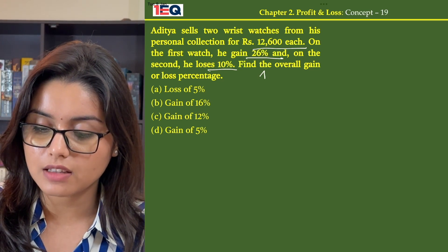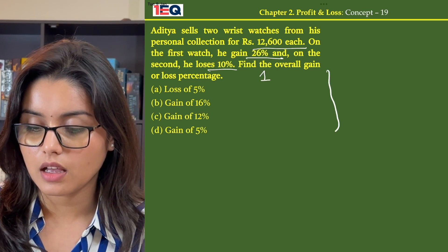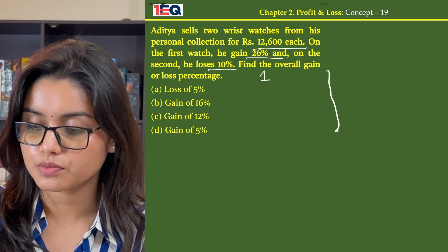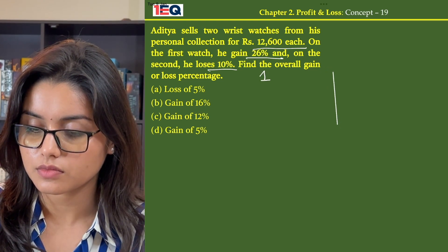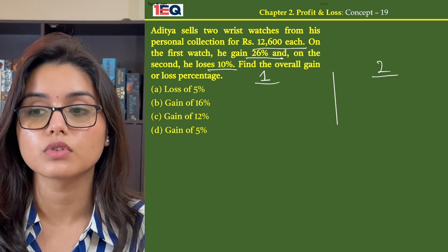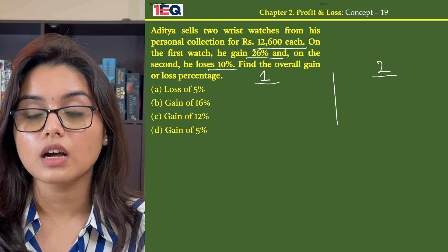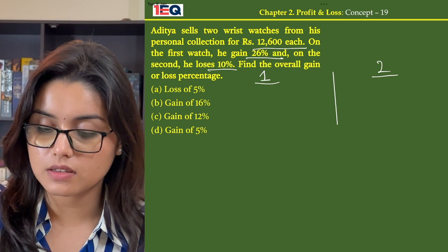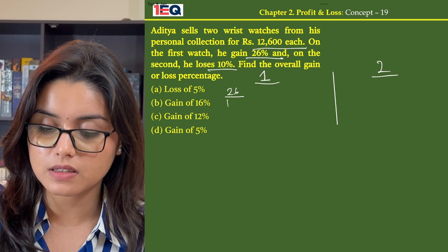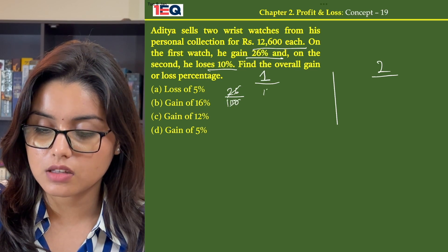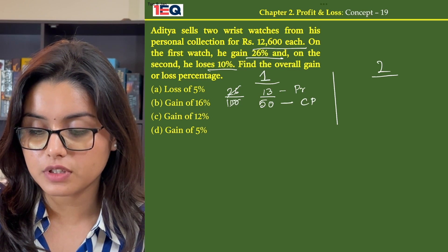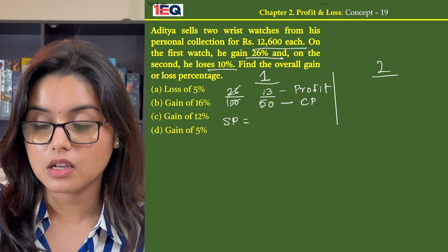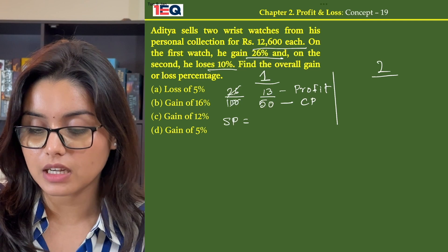So let's take both the watches as watch 1 and watch 2. In case of the first watch Aditya earns a profit of 26%. A 26% profit would mean 26 by 100, that is 13 by 50. So if 50 is my cost price, my profit is 13 and then my selling price becomes cost price plus profit, that is 63.